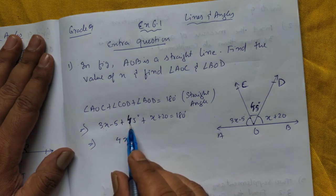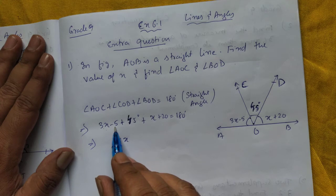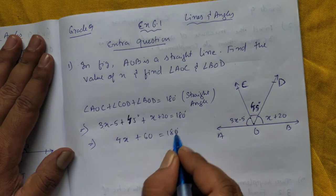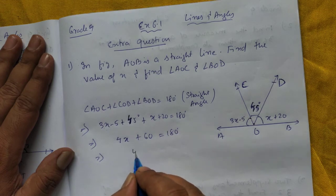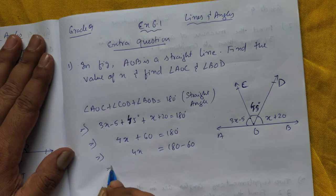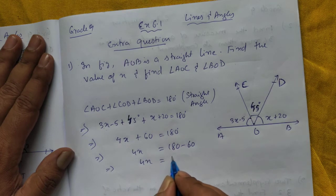40 plus 20 is 60 equal to 180 degrees. Take 60 on the other side, 4X equal to 180 minus 60.